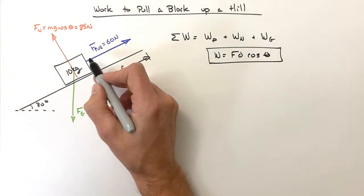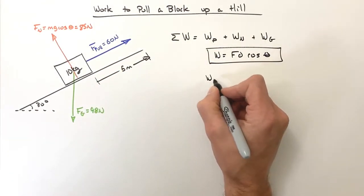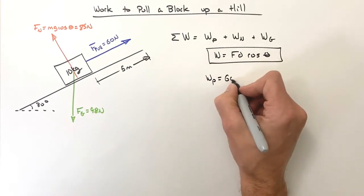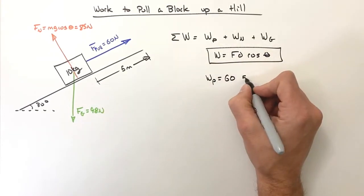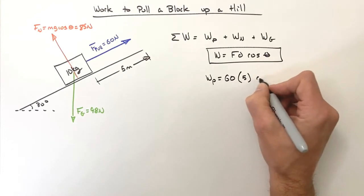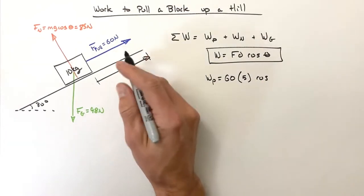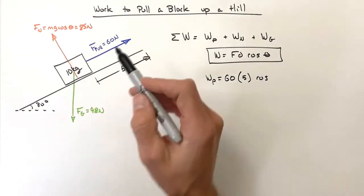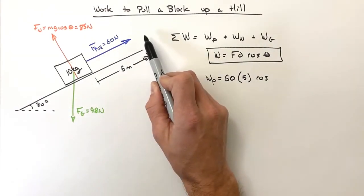So let's first look at the work done by the pull force. Using our formula here we've got 60 times our displacement of 5 times the cosine of the angle between these two displacements. It's real tempting to throw 30 degrees in here, but I want you to realize the pull force is straight up the hill.